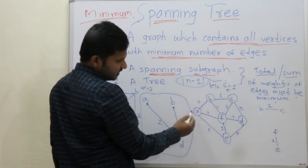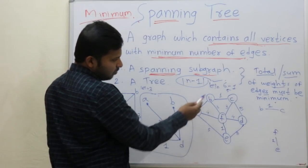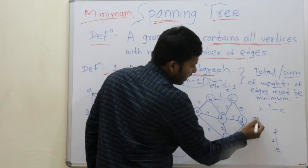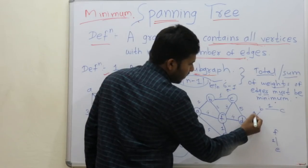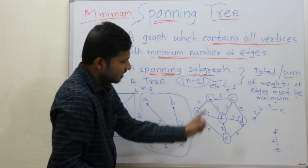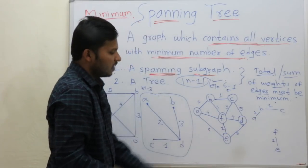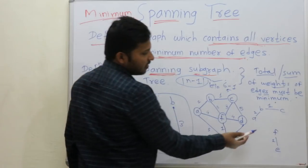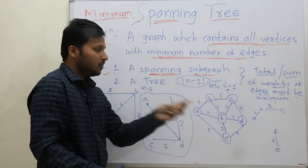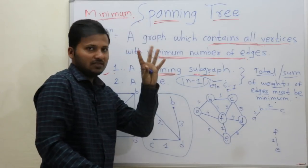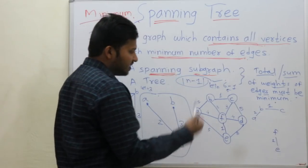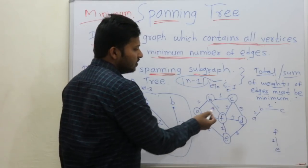Now weight 2: yes, A, B has weight 2. Any other edge? No. How many edges are finished? 3 edges are finished, we want 5 edges. What is the upper value? 3.